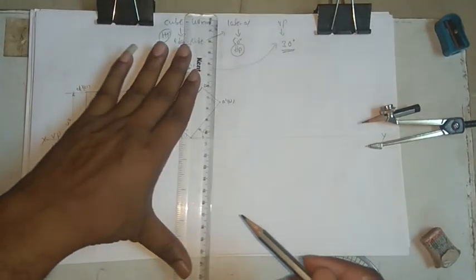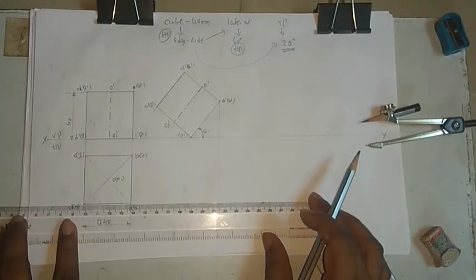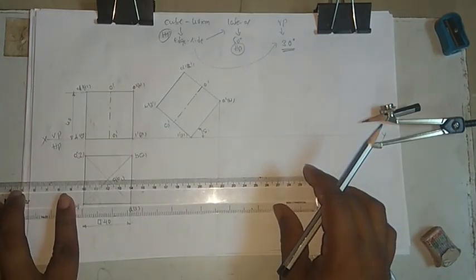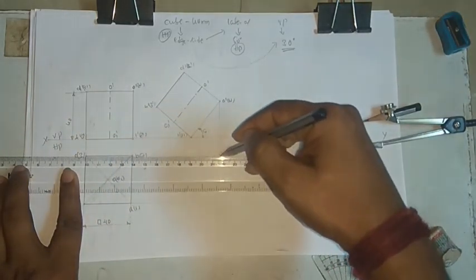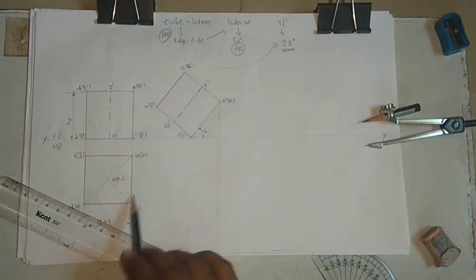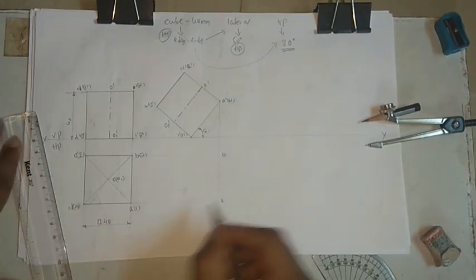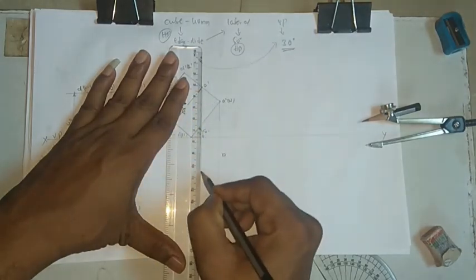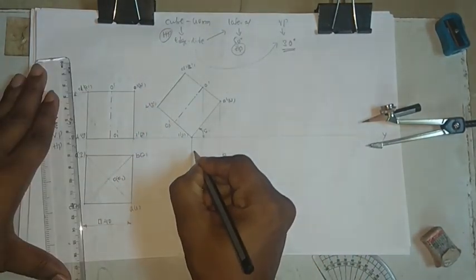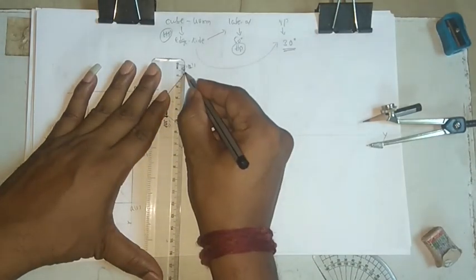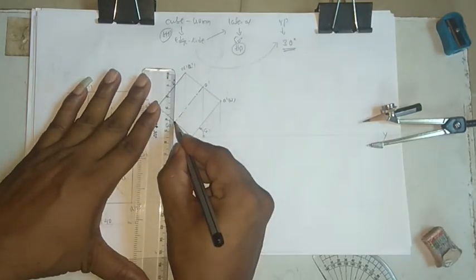Drop the projections from the rightmost and bottommost points. Take all the projection lines. Name the points: this is B, this is A, here we have O, here we have 1 and 2. This is 2, this is 1, this is C and D. This is C, this is D, and this is O1.